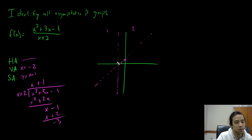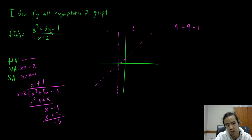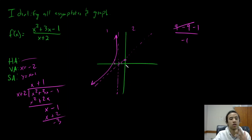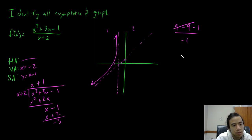Let's plug in a number less than negative 2, so let's do x equals negative 3. Plugging into the original function: 9 minus 9 minus 1 on top gives negative 1, and the denominator gives negative 1, so these cancel and we get positive 1. So at x equals negative 3 we have y equals 1, and we follow the asymptotes like this. Over to the right, let's plug in x equals 0: we get negative 1 over 2, so the point is (0, negative 1 half), and we'll have something like this. There is our graphed function.